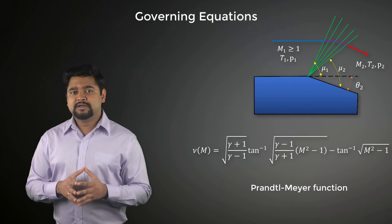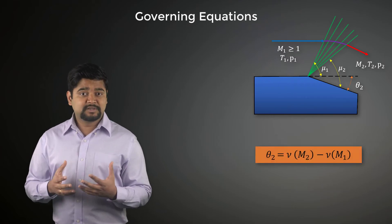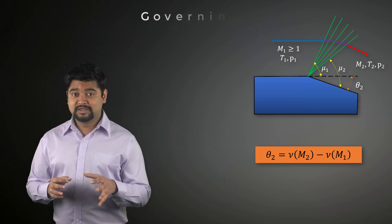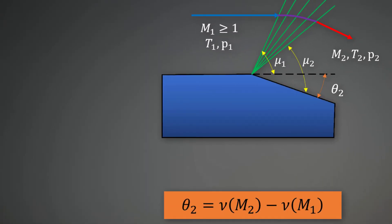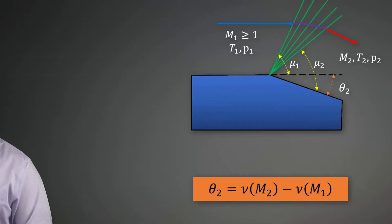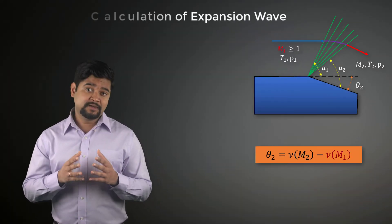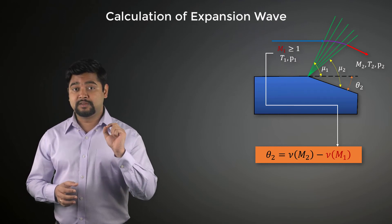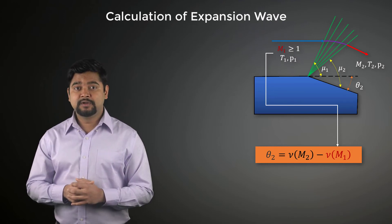Using this function, we can express the deflection angle theta 2 as the difference of Prandtl-Meyer functions corresponding to M2 and M1. We can now calculate the flow properties across a Prandtl-Meyer expansion wave by following these steps. First, we determine nu from the Prandtl-Meyer function using the known upstream Mach value of M1.